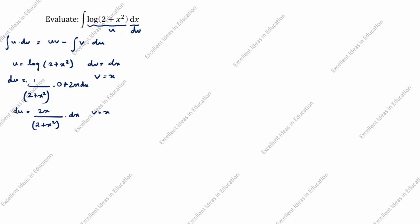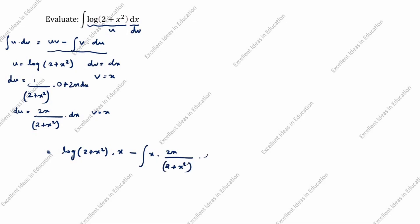So du is equal to 2x divided by (2 + x²) into dx, and v is equal to x. Now we will substitute: u is log(2 + x²) into v which is x, minus integration of v which is x, into du which is 2x divided by (2 + x²) into dx.